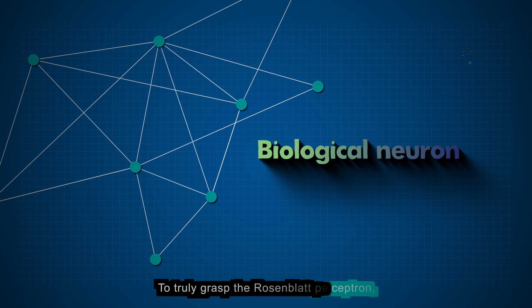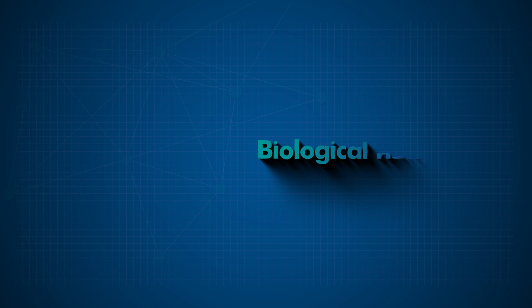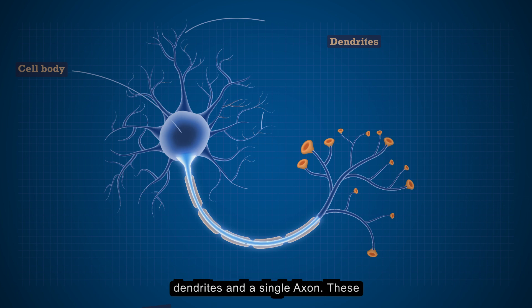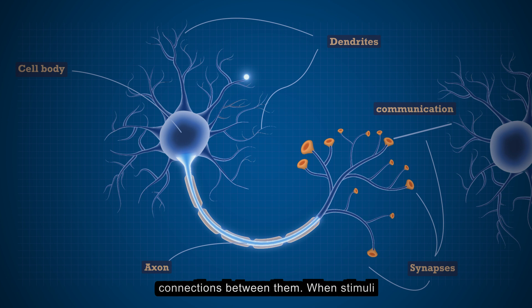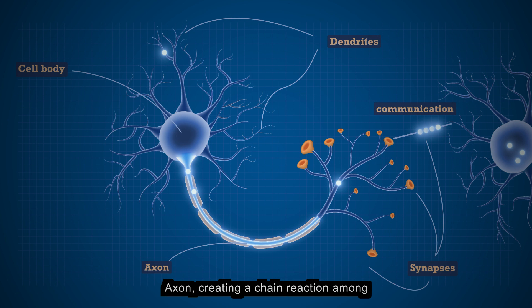To truly grasp the Rosenblatt Perceptron, we need to first understand its inspiration, the biological neuron. Picture a neuron as a tiny powerhouse, consisting of a cell body, multiple dendrites, and a single axon. These neurons communicate through synapses, connections between them. When stimuli arrive at the dendrites, the neuron can fire and transmit a signal through its axon, creating a chain reaction among interconnected neurons.